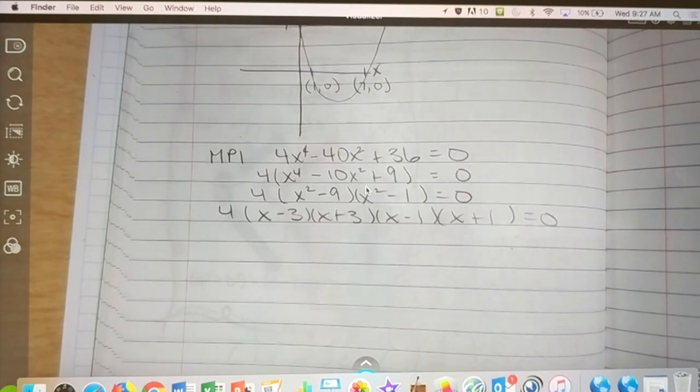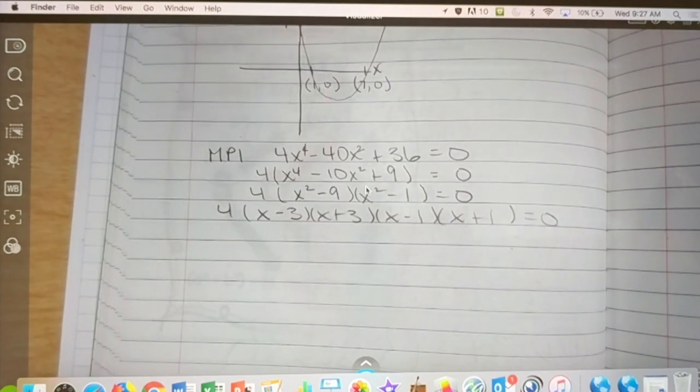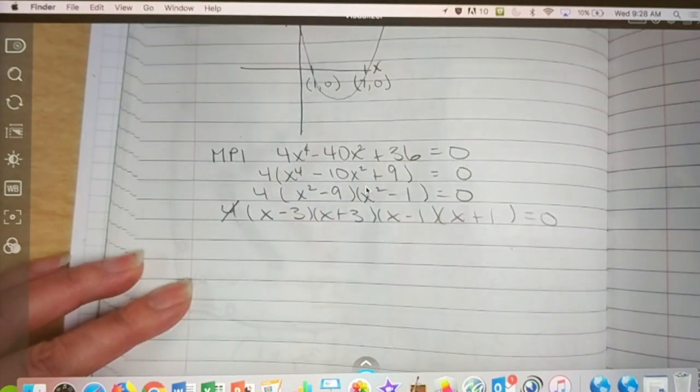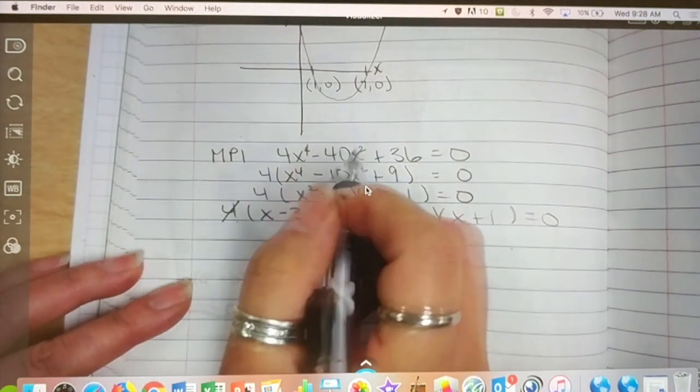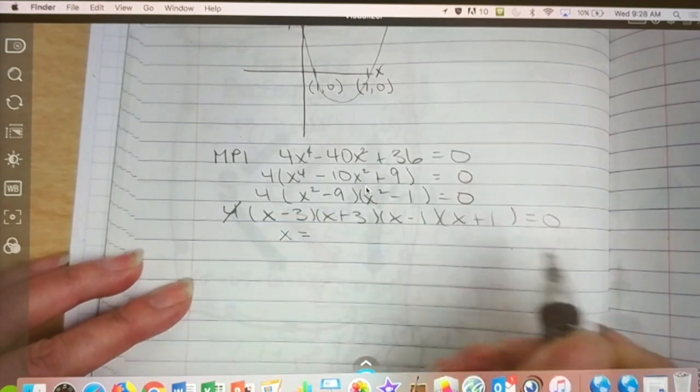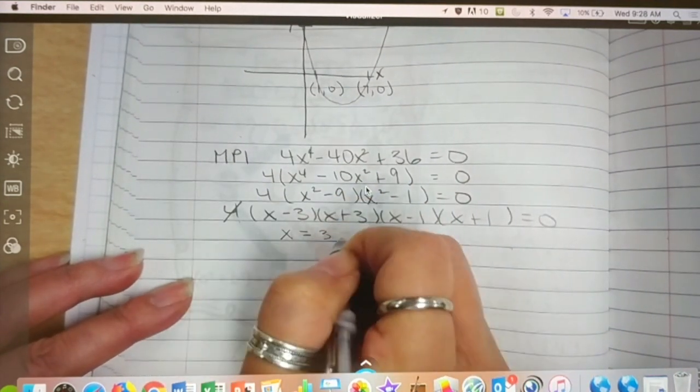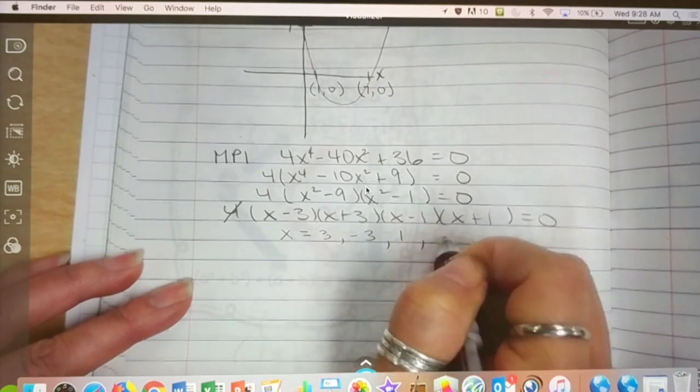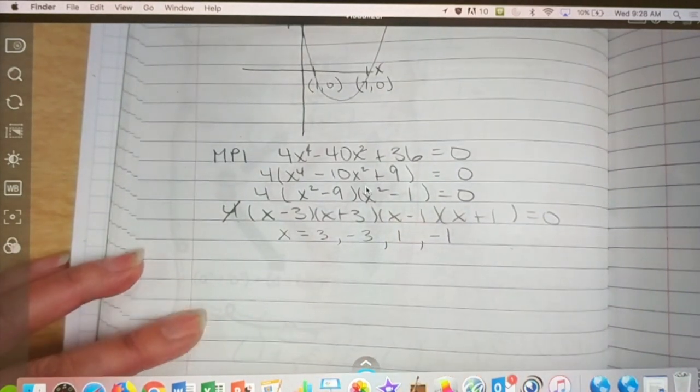Okay, the roots. This first one, since there's no variable in there, we could just ignore it. So, ignore that. So, what are my roots? Three. Negative three. One. Negative one. Very good.